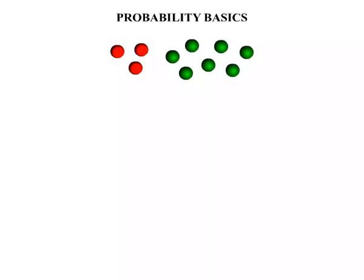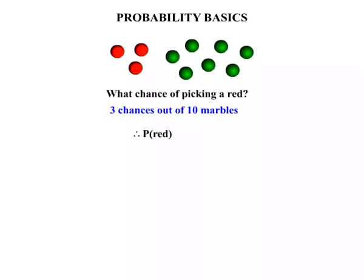We have three red marbles and seven green marbles there and the question I'm going to ask is what chance of picking a red? That's what probability is about. We're asking what chance something has of occurring. Well, we can see that there are three reds out of the ten marbles so we have three chances out of ten marbles in picking the red. So therefore, P of red, the probability of choosing a red equals three chances out of ten, three tenths.